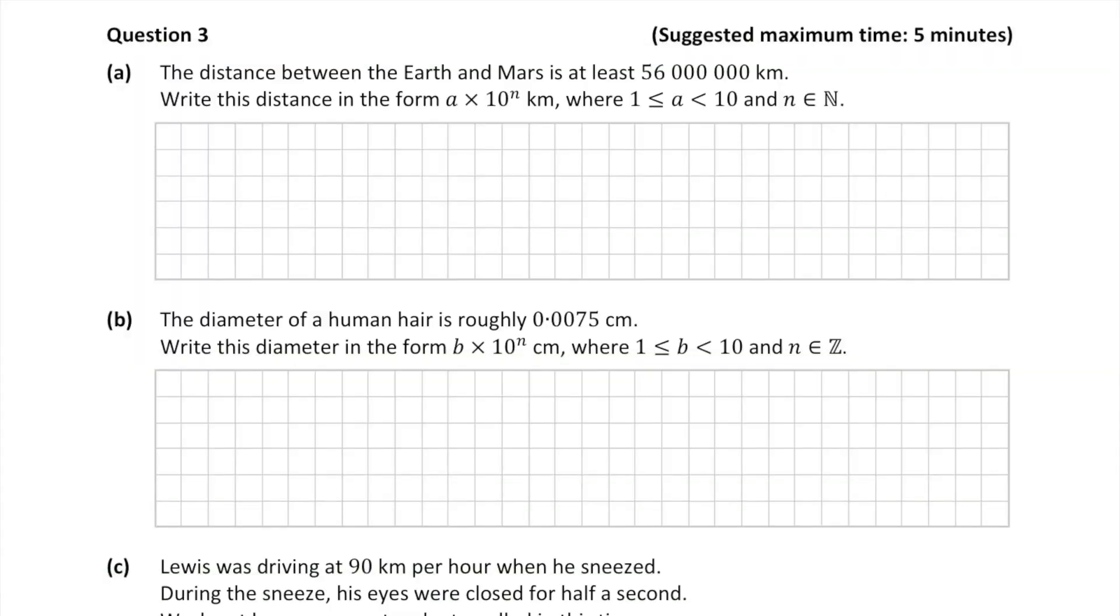Here's today's question which is worth 15 marks. In part A we have to write 56 million kilometers in scientific notation where A is between 1 and 10.